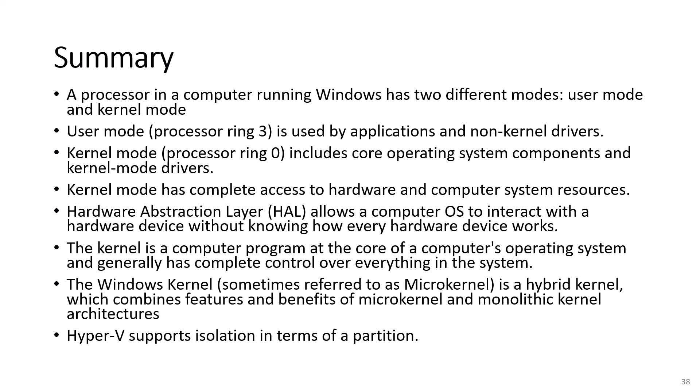In summary, a processor in a computer running Windows has two different modes: user mode and kernel mode. User mode — Processor Ring 3 — is used by applications and non-kernel drivers. Kernel mode — Processor Ring 0 — includes core operating system components and kernel mode drivers. Kernel mode has complete access to hardware and computer system resources. Hardware Abstraction Layer, or HAL, allows the computer OS to interact with hardware devices without knowing how every hardware device works. The Windows kernel, sometimes referred to as the microkernel, is a hybrid kernel which combines features and benefits of microkernel and monolithic kernel architectures. Hyper-V supports isolation in terms of a partition.